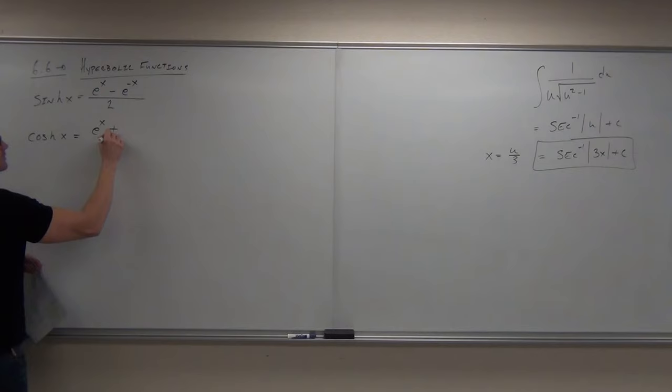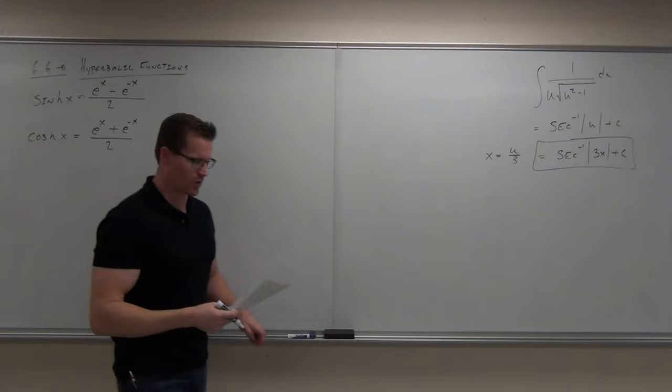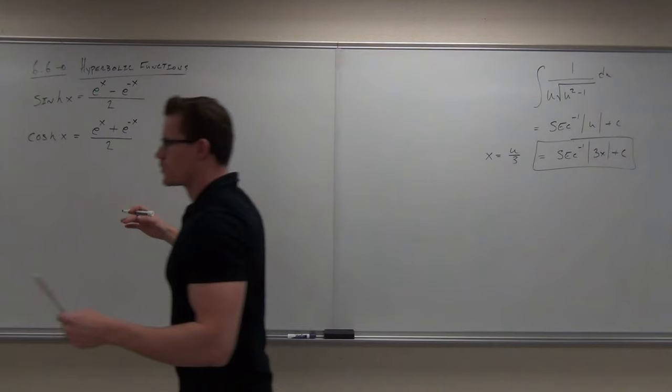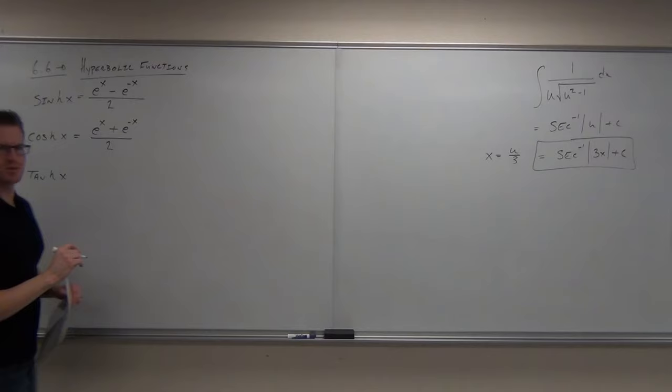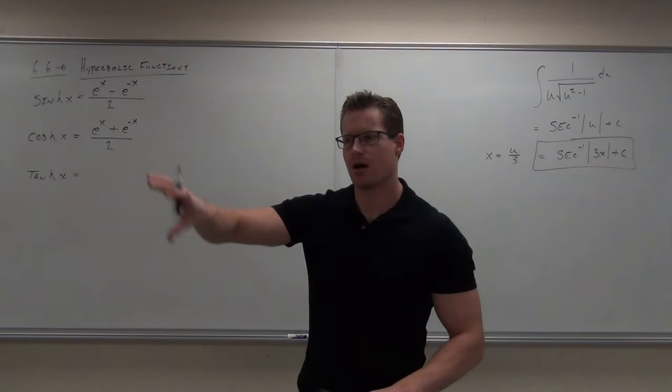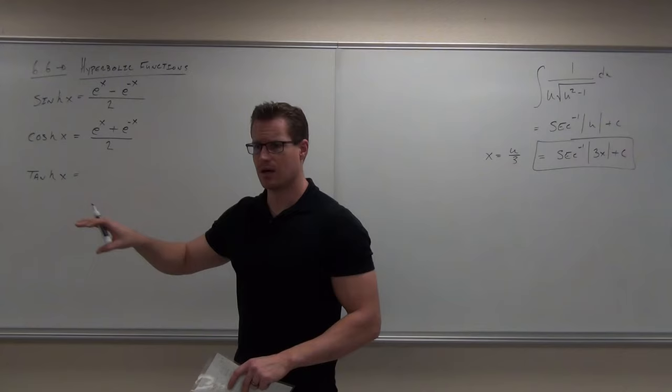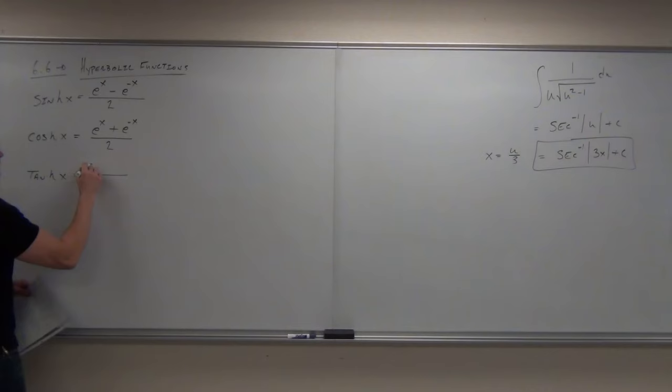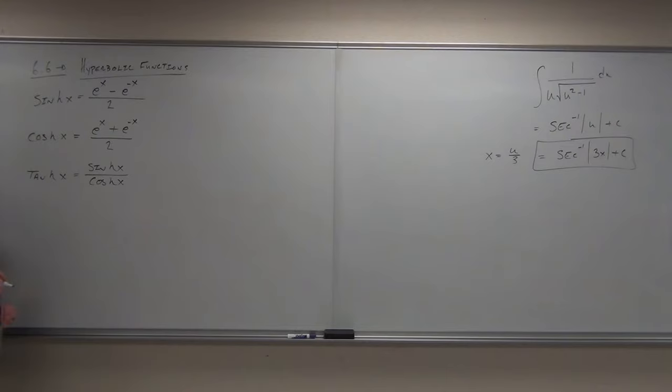Hyperbolic cosine is called 'cosh.' It looks really similar. The rest of the hyperbolic functions stem from these two. If you want a hyperbolic tangent — no special name — a lot of the same properties of trig functions carry over. Whereas tangent equals sine over cosine, hyperbolic tangent equals cinch over cosh — hyperbolic sine over hyperbolic cosine.